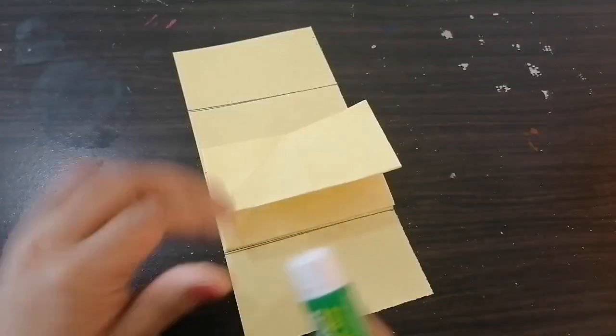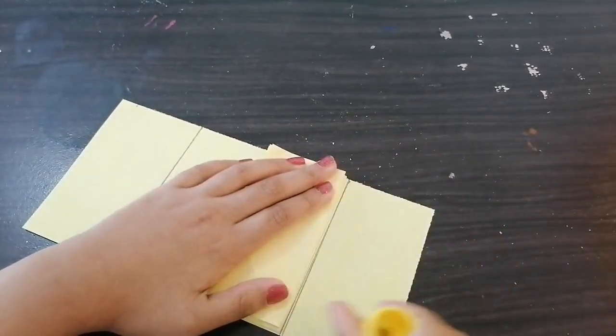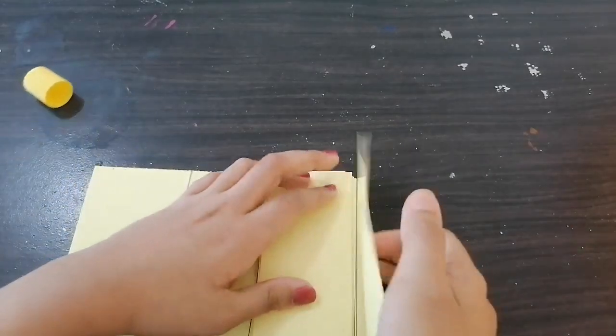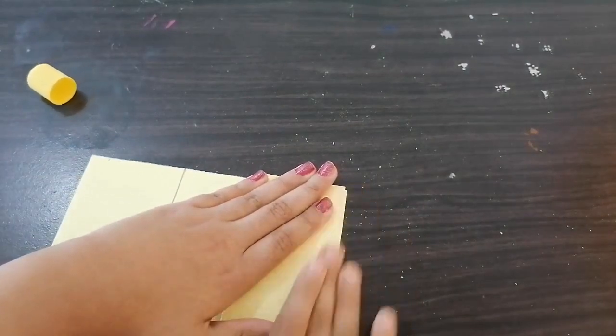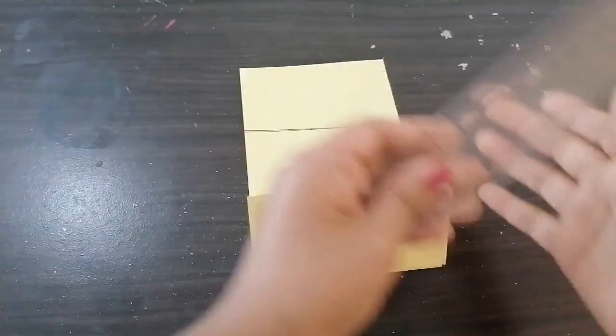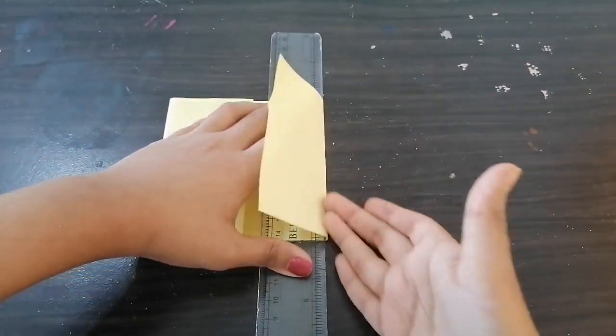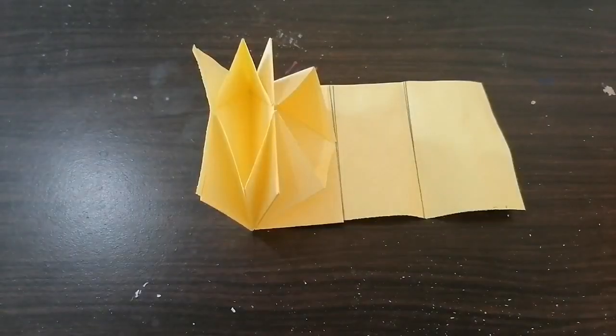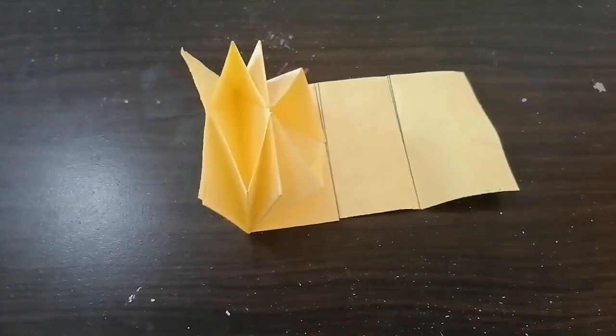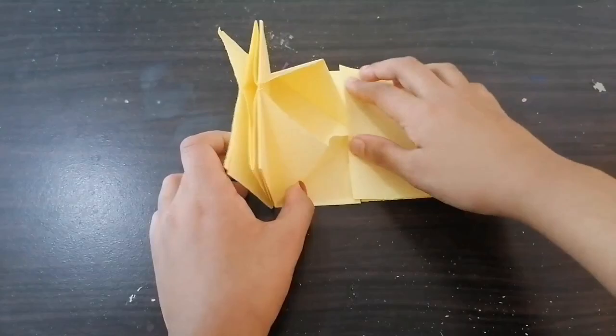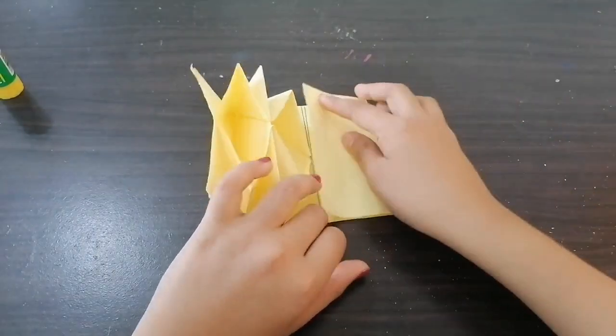Now you need to apply glue at this side and stick it on top of this. Now take a scale and bend the edges like this. Apply some glue here and fold it like this.